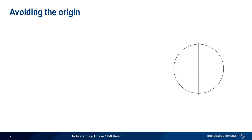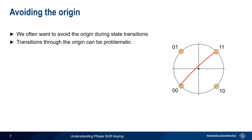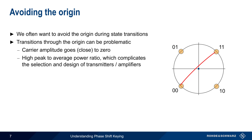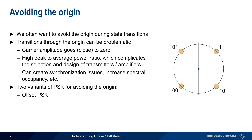Another issue in phase shift keying involves avoiding the origin — that is, the center or zero point in our constellation diagram. When we transition from the 1-1 state to the 0-1 state, we don't pass through or near the origin. On the other hand, transitioning between the 1-1 and the 0-0 state does cause the signal to pass near the origin. Transitioning through or near the origin can be problematic, primarily because the carrier amplitude temporarily goes very low or to zero. One undesired result is a high peak-to-average power, which complicates the selection or design of transmitters and amplifiers. Passing through or near the origin can also create synchronization issues or increase the spectral occupancy of a signal. However, there are two variants of PSK designed to avoid the origin: offset PSK and differential PSK.